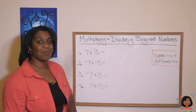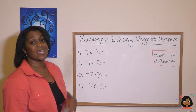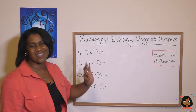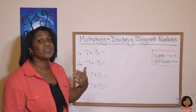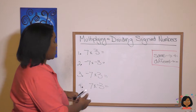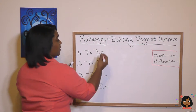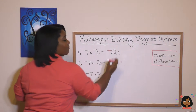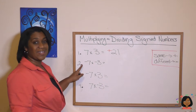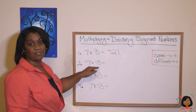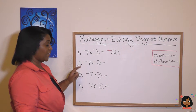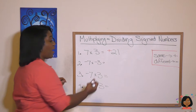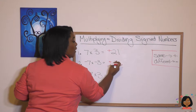Take a look at this example. Problem number one: seven times three. When we don't put that positive sign in front of a number, we assume that it's positive. So my answer here is going to be a positive 21. What about a negative seven times a negative three? If we look at our rules, they have the same sign, so our answer will be a positive 21.